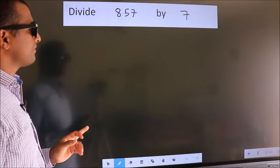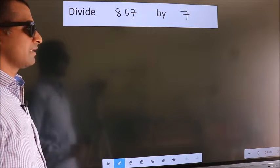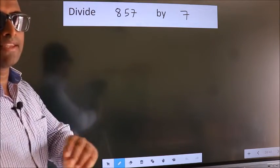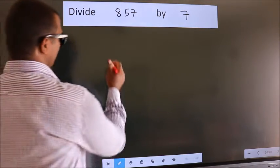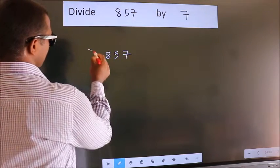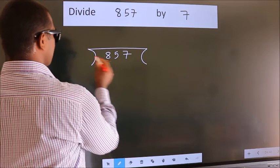Divide 857 by 7. To do this division, we should frame it in this way. 857 here, 7 here.